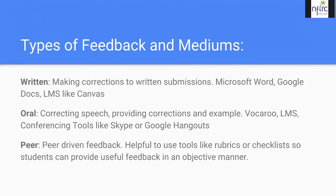Oral feedback is when we correct speech, providing corrections and examples. Great tools include Vocaroo, your actual LMS, and conferencing tools like Skype or Google Hangouts — if I meet a student in a Skype conference, I can give oral feedback to help them progress. We also talked about peer-driven feedback, which is helpful to use with rubrics and checklists so students can go through and provide helpful, objective feedback. Without a clear rubric, some students might just write 'good job,' but a rubric helps them listen carefully and look for specific things to point out.